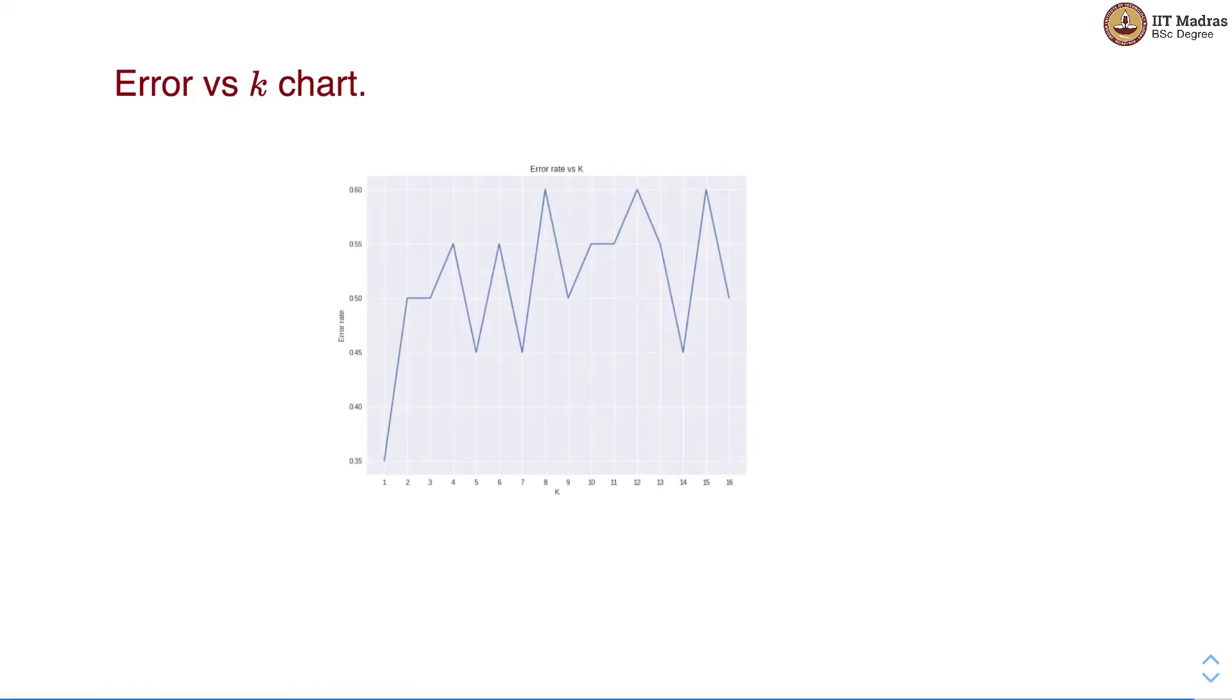So what we do is we plot a chart where we have K on x-axis and error on y-axis. For different values of K we track the error that we get for prediction in the validation set. And we select the value of K that results in the lowest error rate. So in this particular chart the error is lowest when K is equal to 1, hence we will choose K equal to 1 for this particular chart.